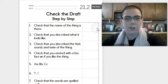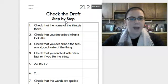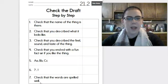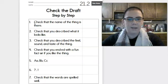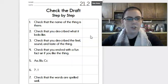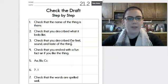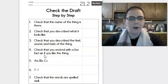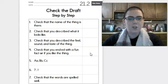And this says check the draft step by step. So when your draft is complete and you're done writing those sentences, I want you to look at this checklist and make sure that you have all of these things. Number one said check that the name of the thing is there. Did you write grapes? Yes. Check mark. Check that you described what it looks like. Make sure that you use the word look and wrote about that. If you did, check mark there. Check that you described the feel, sound, and taste. If you wrote all three of those things, check mark there. Number four. Check that you ended with a fun fact or if you like the thing that we're talking about. So that's your concluding sentence. You have to have a concluding sentence. Check that off.